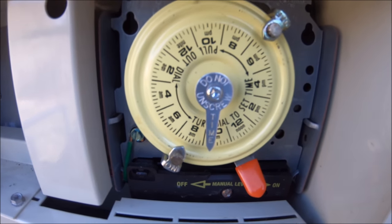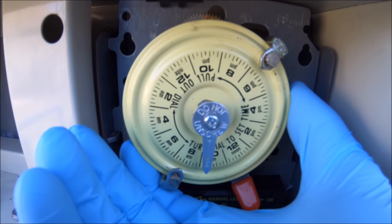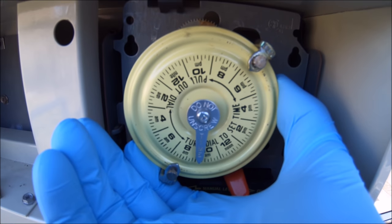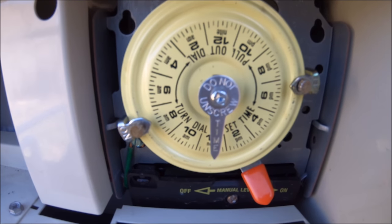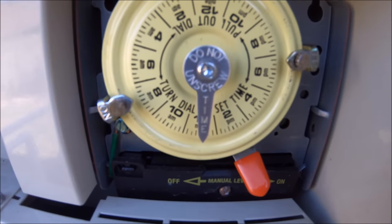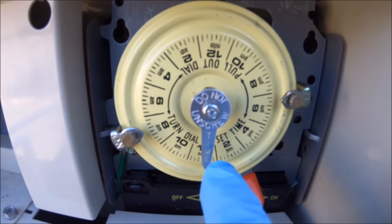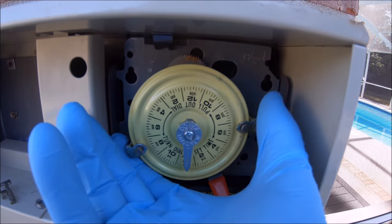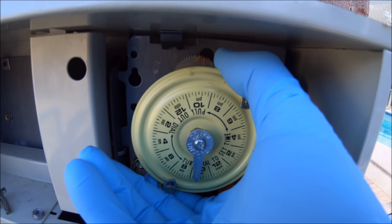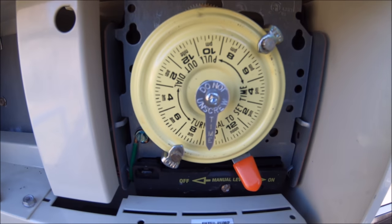So to adjust the time, you're going to pull it out and twist it. Say right now it's 12 noon. I'm going to pull it out, twist it, let it go. It'll re-engage - there's a spring in there. Here it's almost 10 a.m., so I'm going to put it back to that time.